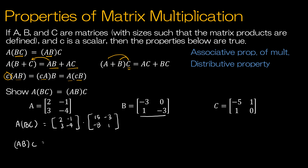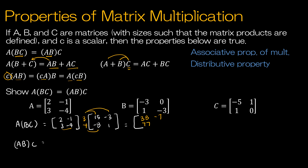Now I multiply A by the result BC. Using row 2, negative 1: 30 plus 8 is 38, and negative 6 plus negative 1 is negative 7. Then using row 3, negative 4: 45 plus 32 is 77, and negative 9 plus negative 4 is negative 13. So we should get the same solution using the other grouping.